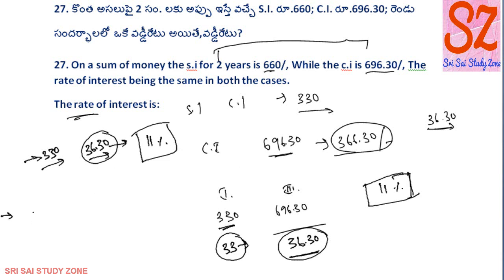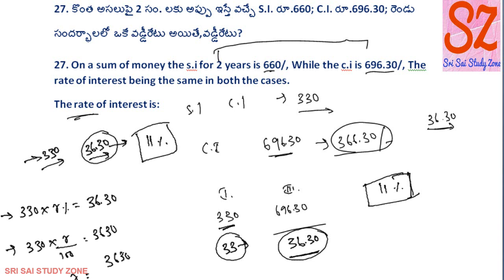The 1 of 2 is equal to 36.30. So 330 into r by 100 is equal to 3630. So zeros get cancelled: 33 is equal to 11 times, and here we have 36.30, so this is 11 times, so that is equal to 11 percent. Normal quality — okay.